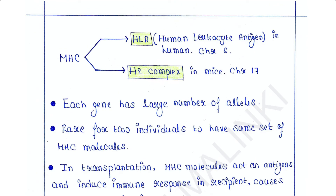In humans, MHC is also called HLA or human leukocyte antigen. In mice, it is called the H2 complex. MHC genes are found on chromosome 6 in humans and on chromosome 17 in mice.